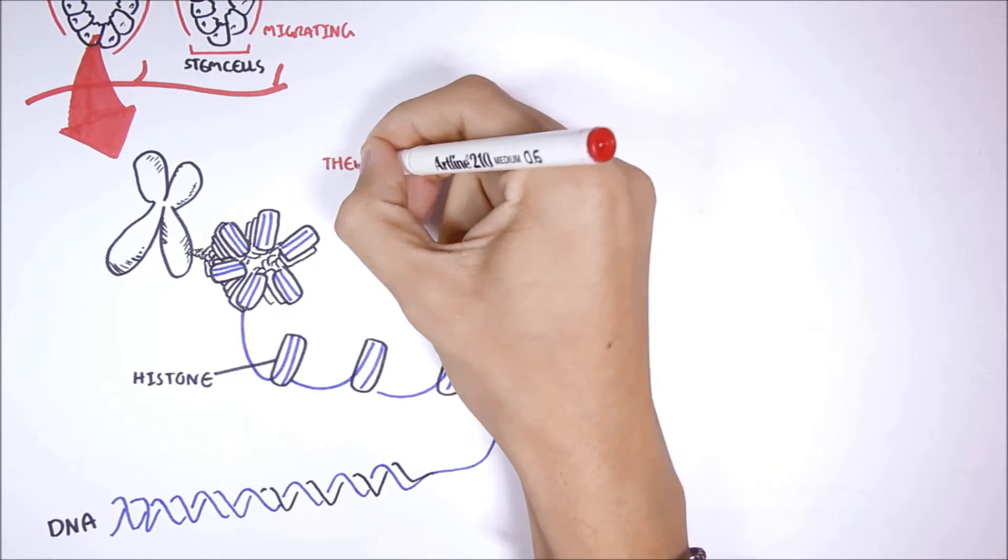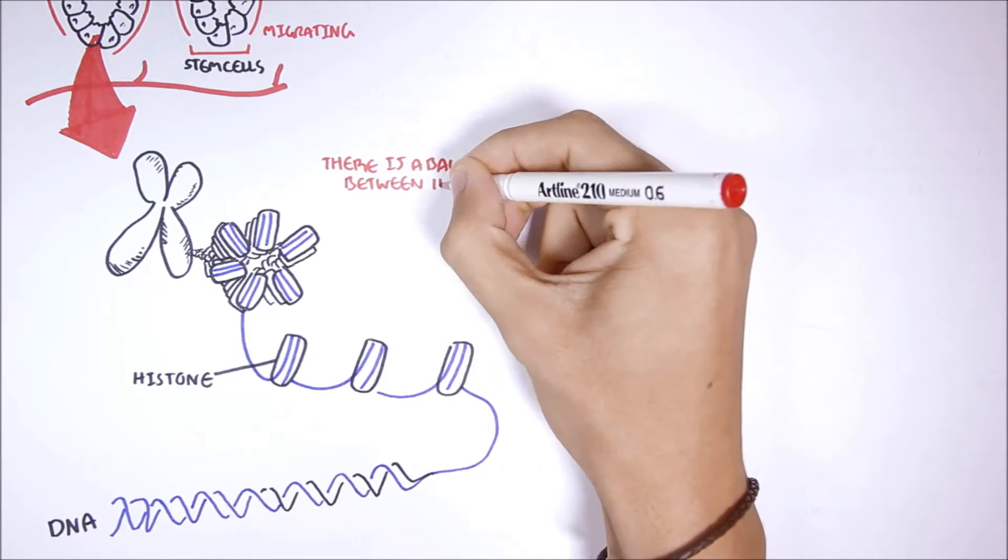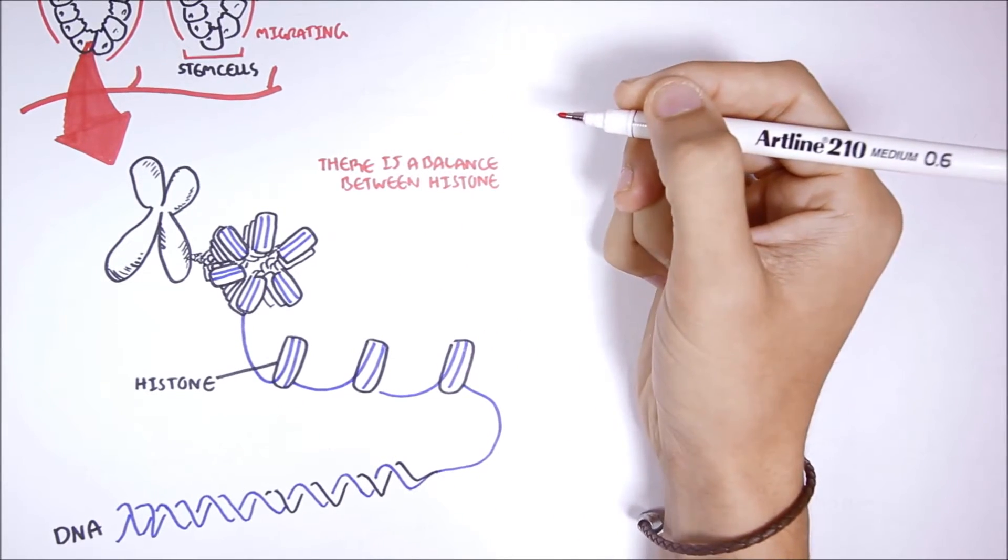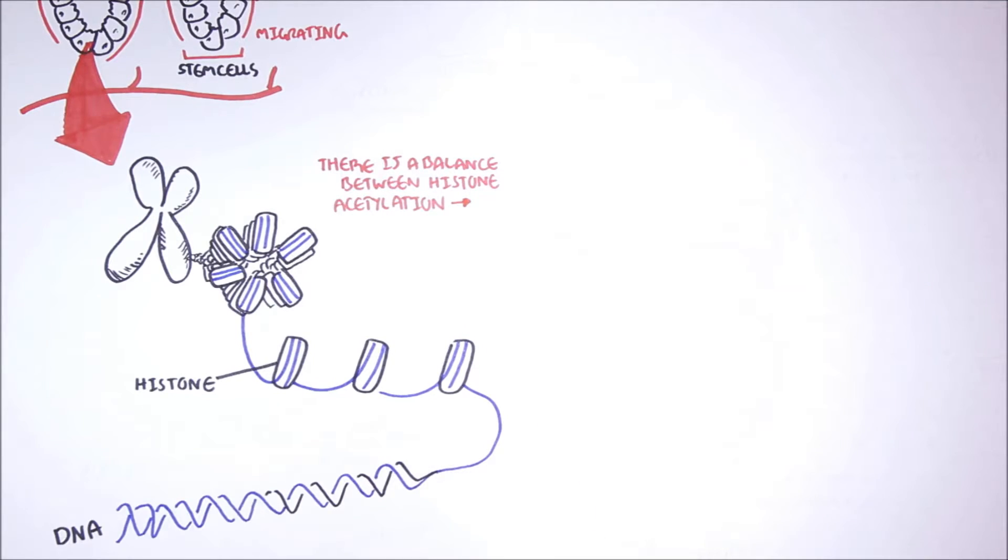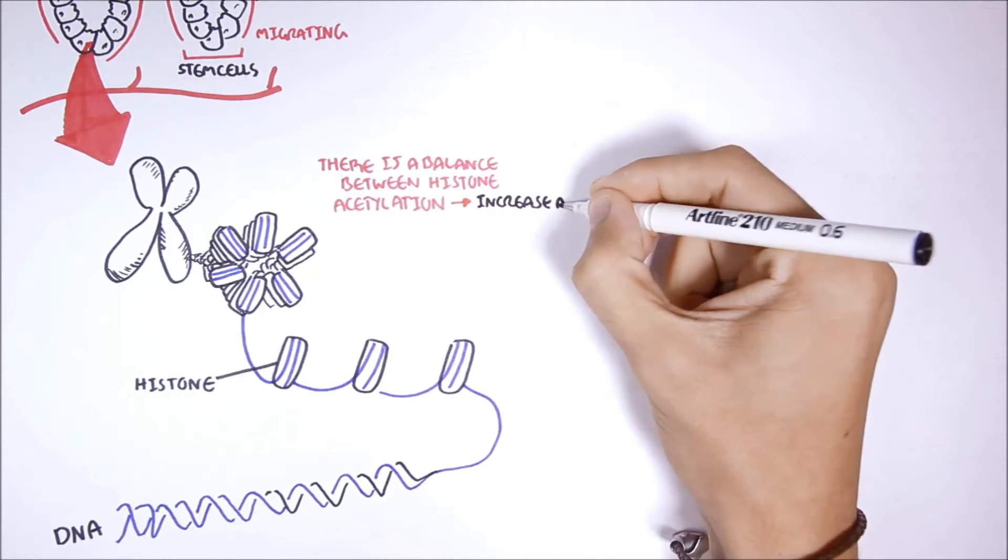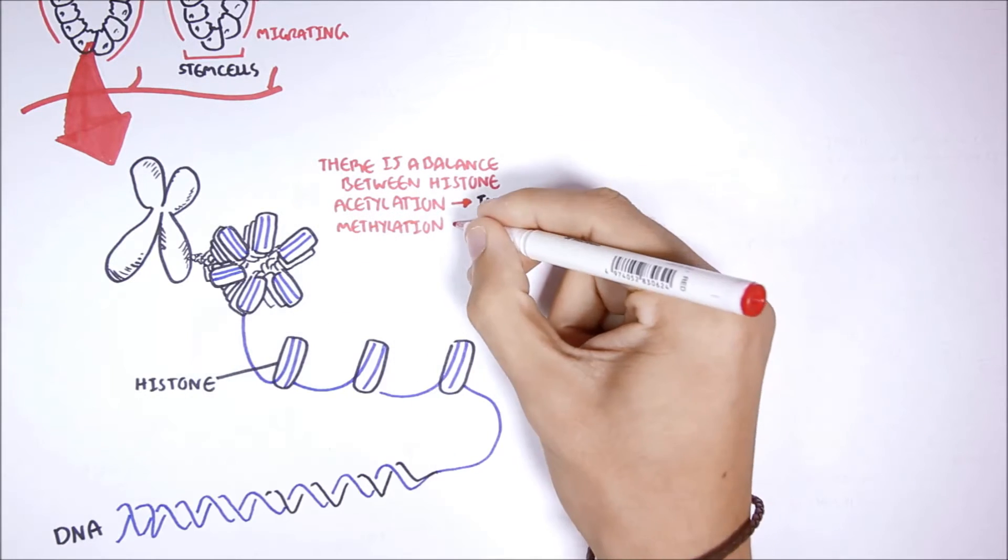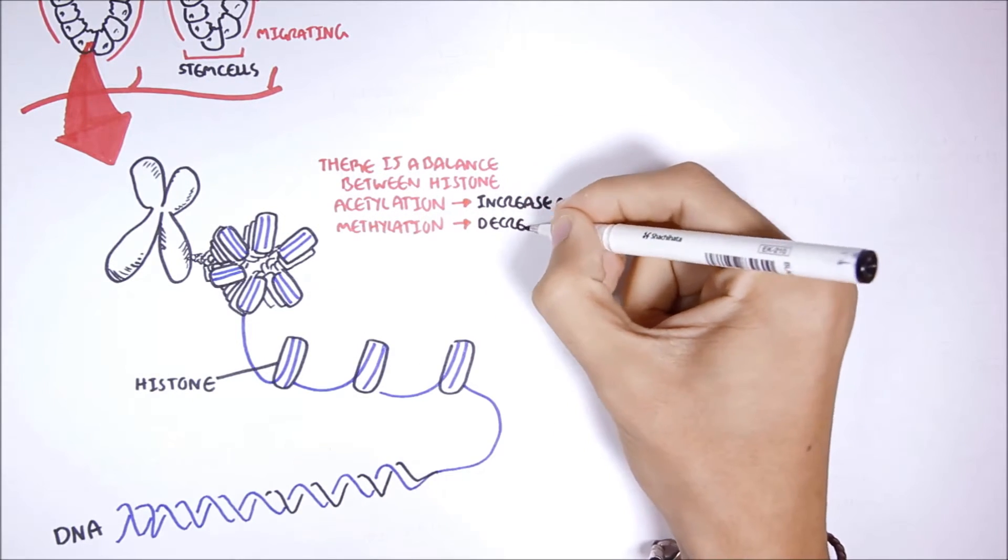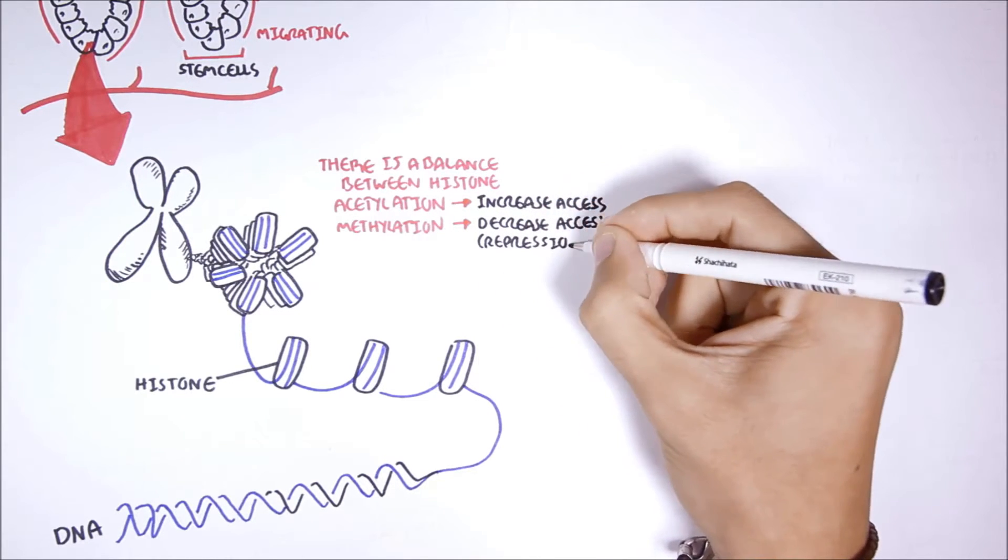In a normal colon cell, there is a balance between what's called histone acetylation and histone methylation. Histone acetylation means that there is better access for transcription factors to the DNA. Histone methylation means that there is decreased access for transcription factors to the DNA, so there is repression.